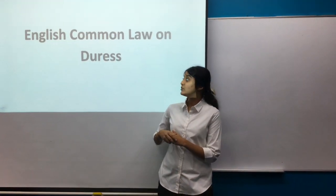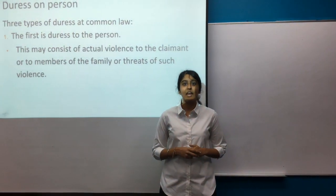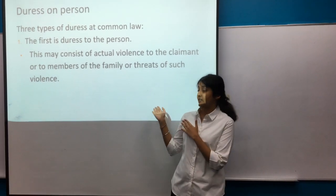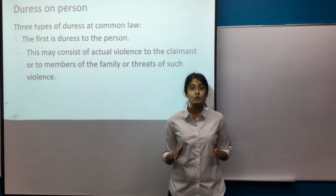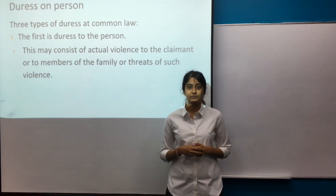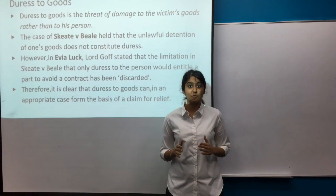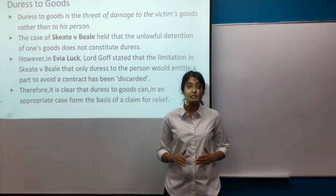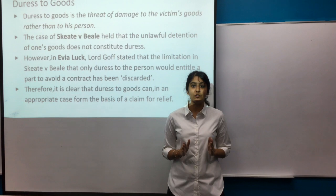There are three types of duress at common law. The first is duress to the person, which may consist of actual violence to the claimant or to members of the family, or threats of such violence. Duress to goods is a threat of damage to the victim's goods rather than to his person. The case of Skeate v Beale held that the unlawful detention of one's goods does not constitute duress.